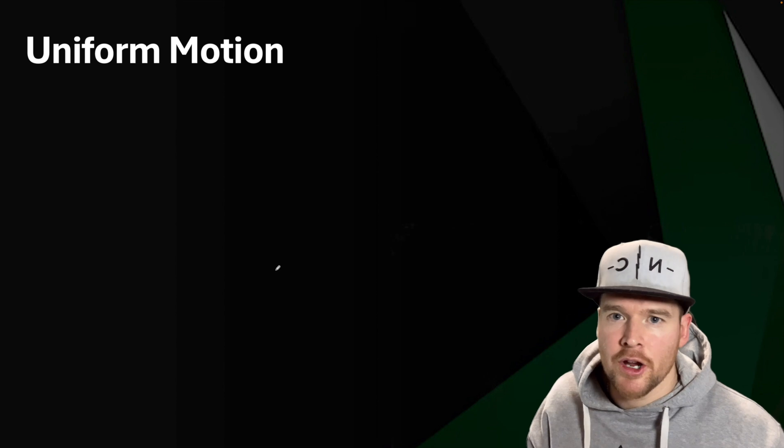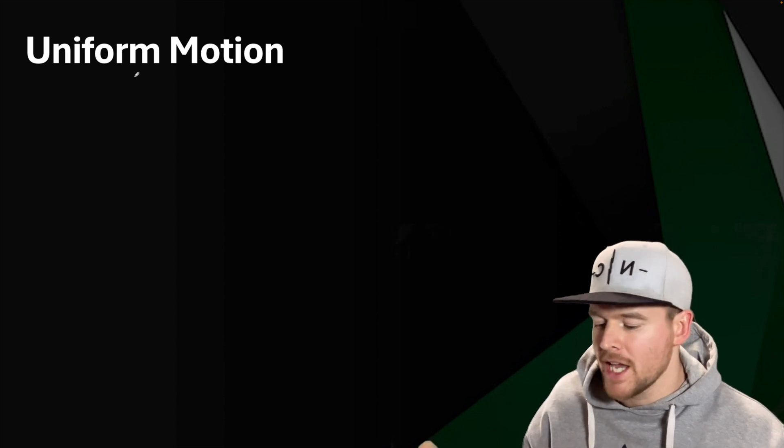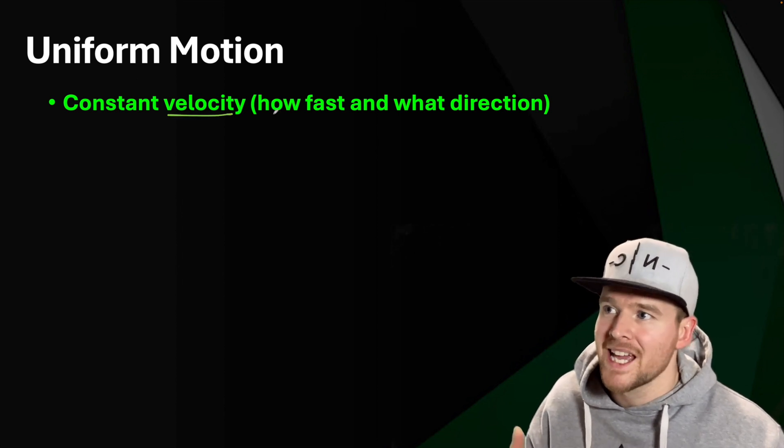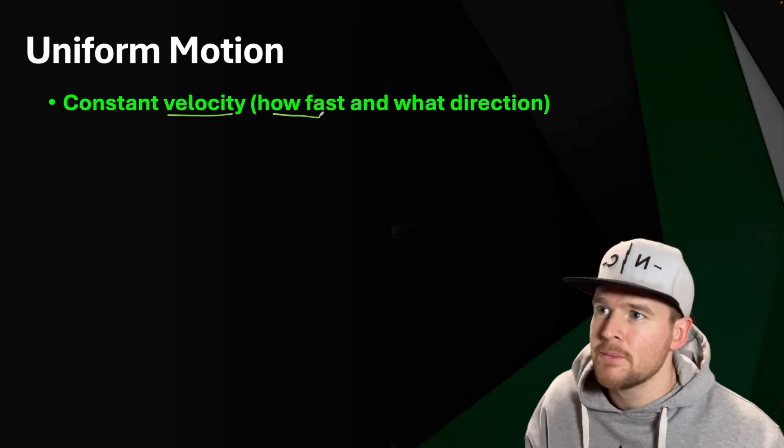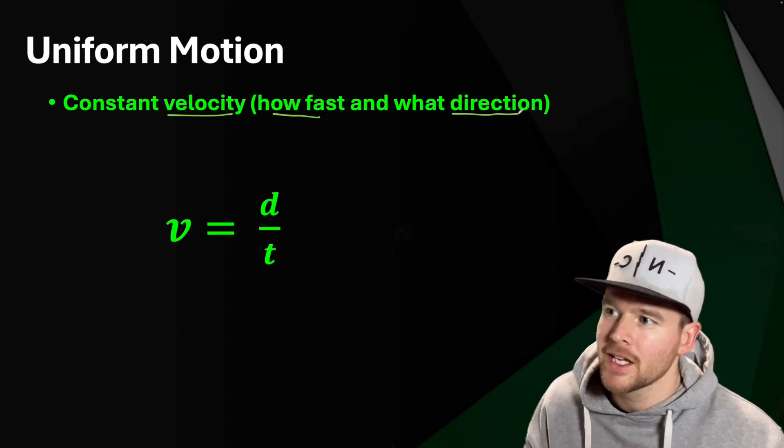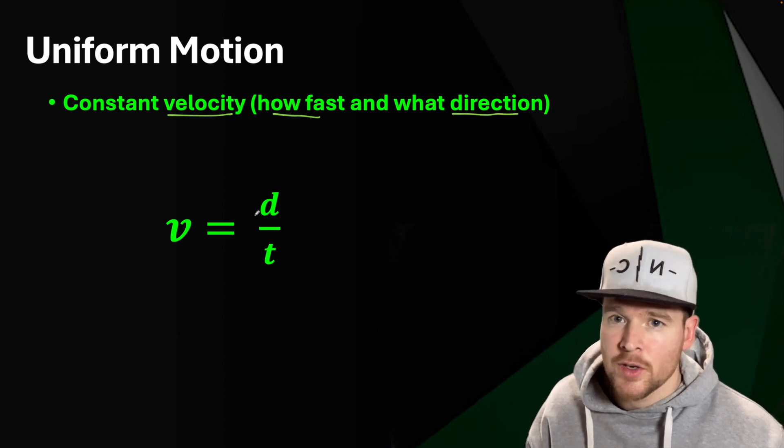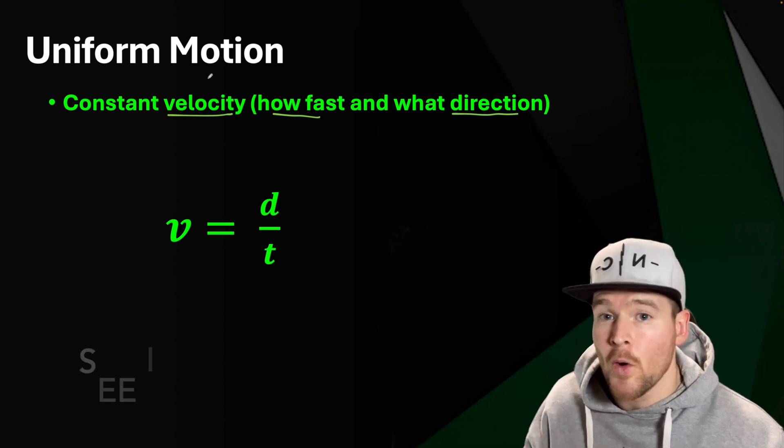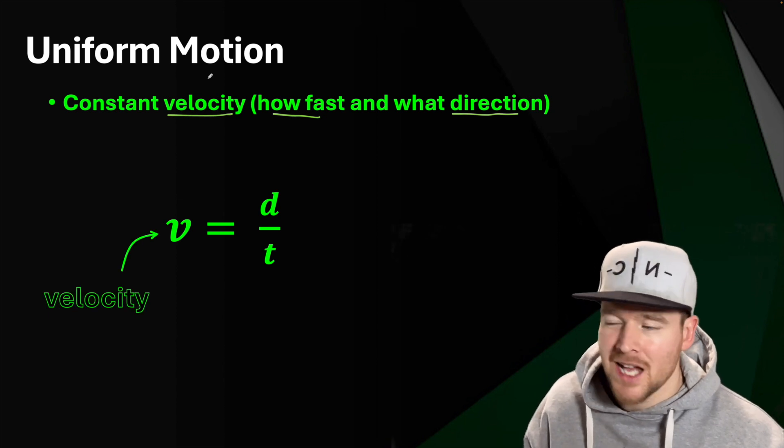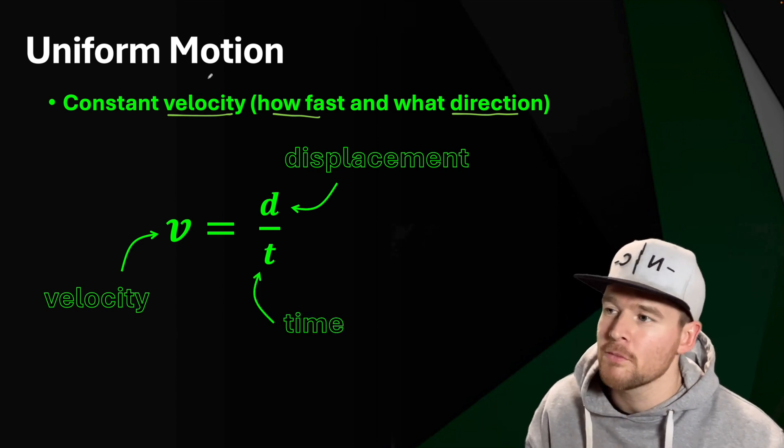So there can be some complex scenarios where we're talking about velocity, but we're going to start with the easiest one, which is uniform motion. Uniform motion means talking about a constant velocity. Remember velocity is our vector term, so we're saying a constant how fast or constant speed, but also a constant direction. And when that's occurring, we get this formula of v is equal to d over t.